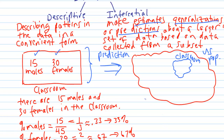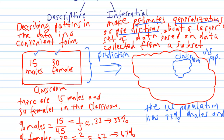We can write that as follows. Here's the population: this information gives us 33% male and 67% female. Now, it's clear that this inference isn't very good, because we know that in the U.S. population about half of the people are male and half are female. So this is an example of a bad inference.